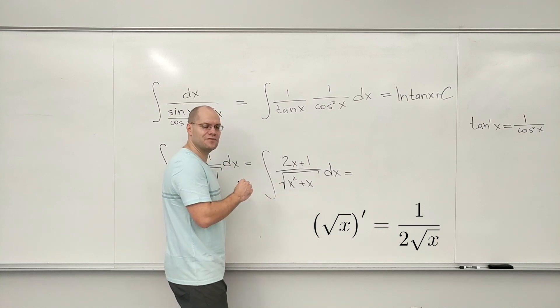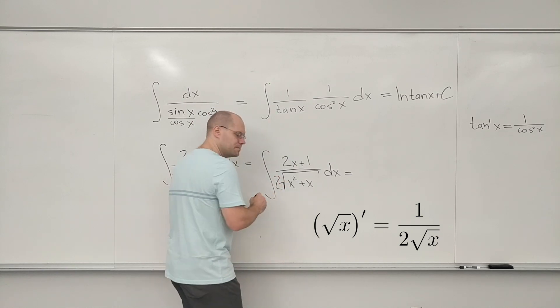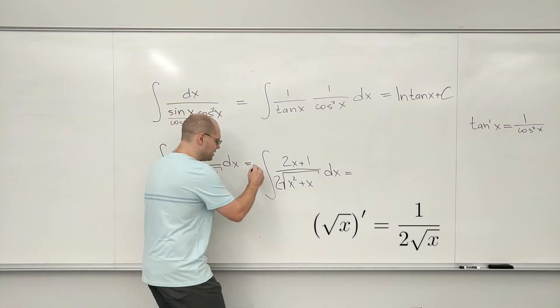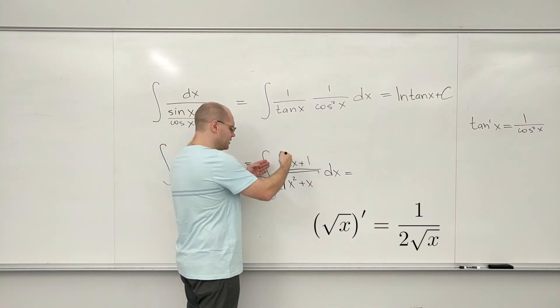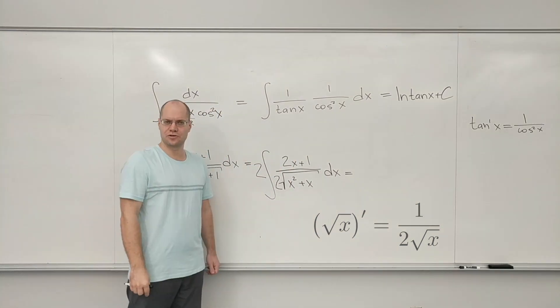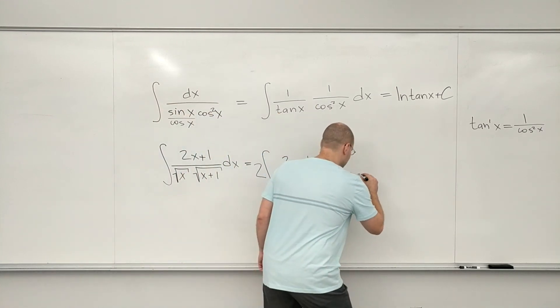So to make up for it, to make it work, we have to have an extra 2 on top as well. Or you can do this: put a 2 on the bottom and then to make up for it put a 2 outside, because I want to have 1 over 2√(something), and then the answer becomes...